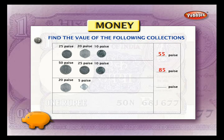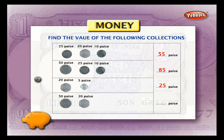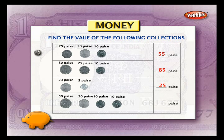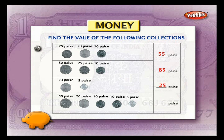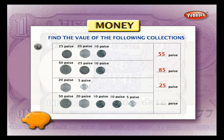1 fifty paisa plus 1 twenty paisa plus 2 ten paisa plus 1 five paisa is equal to 50 plus 20 plus 10 plus 10 plus 5, which is equal to 95 paisa.